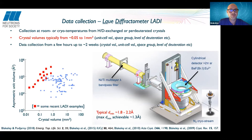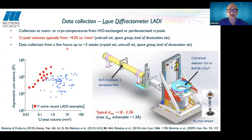We can collect data at room or cryo temperatures from hydrogen-deuterium exchanged or perdeuterated crystals. Crystal volumes typically range from around 0.05 mm³ for small unit cells to around 1 mm³ for very large cells, depending on cell volume, space group, and level of deuteration. Data collection can take a few hours for a very small cell with a large perdeuterated crystal such as rubredoxin, up to around two weeks for a large system with a small crystal.